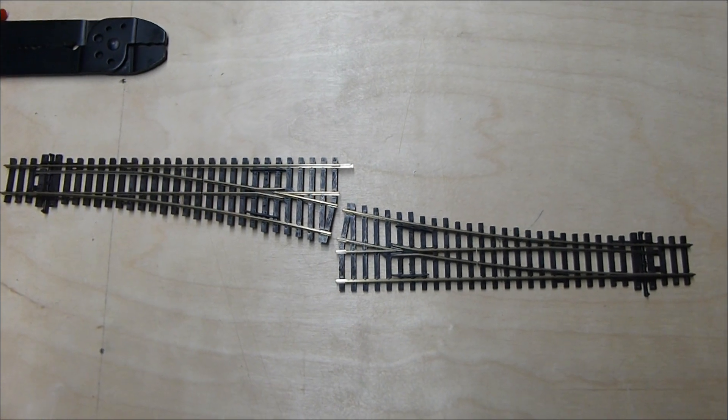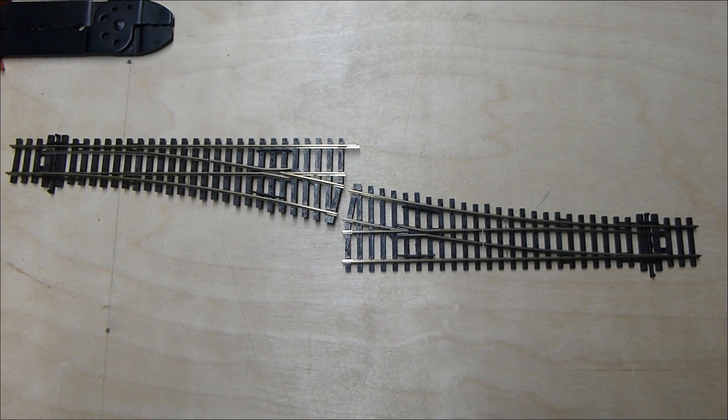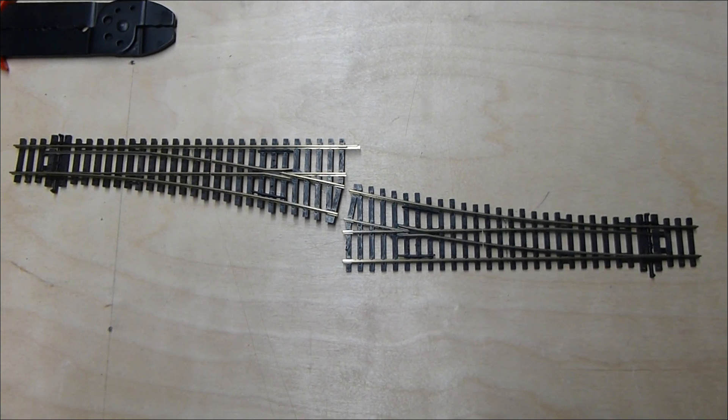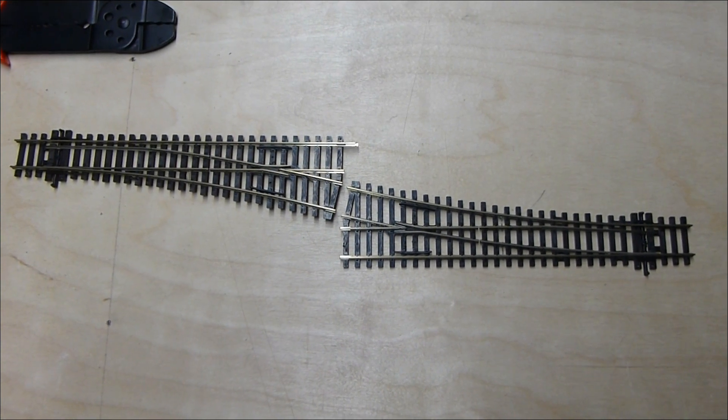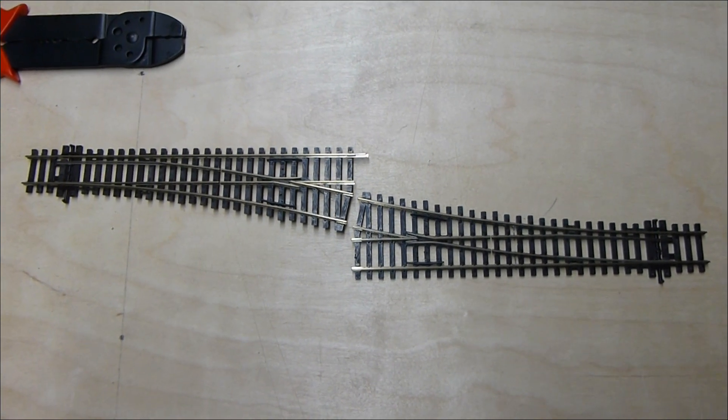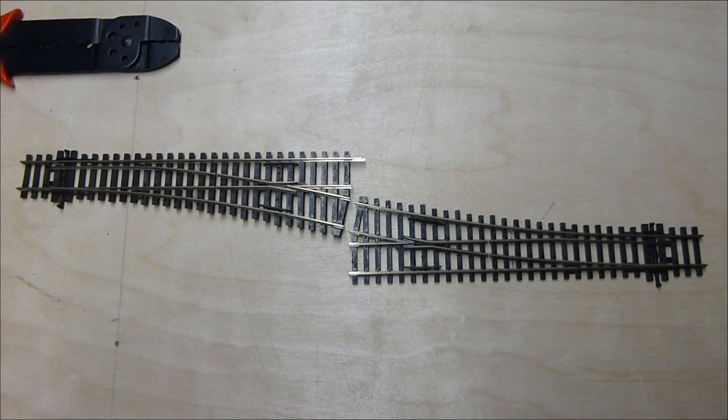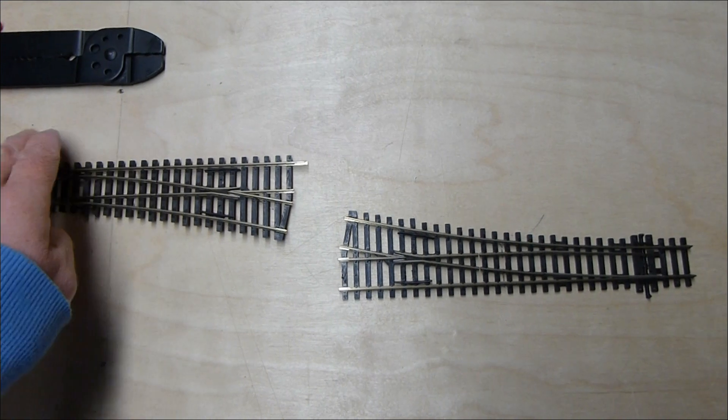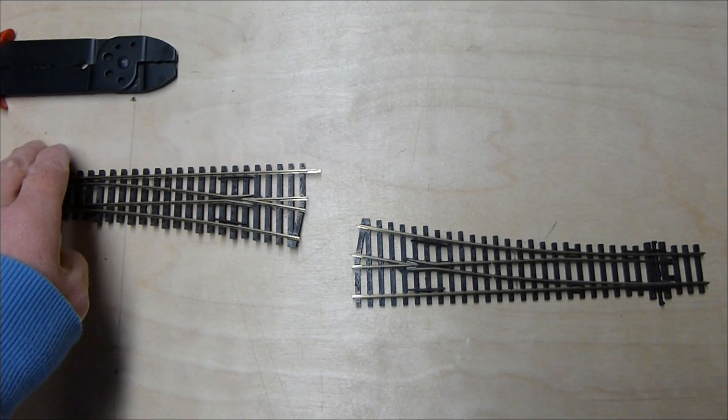In front of me I've got two medium radius Pico turnouts that just came off my layout at Dean Park Station because I'm replacing them with two long turnouts. The reason for this was that when trains went across the tracks, the carriages rubbed against the mock platform I'd made up.